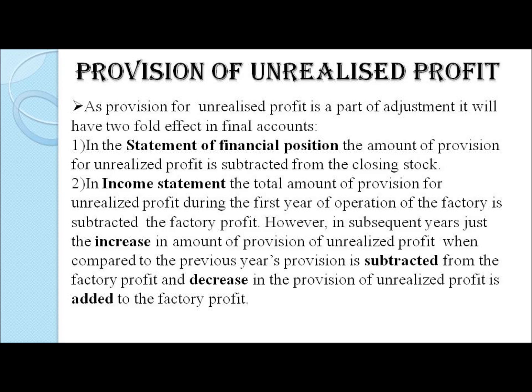As it is a part of adjustment, it will have a two-fold effect. Firstly, we subtract the total amount from the closing inventory in the statement of financial position. Furthermore, we subtract the total amount from the factory profit in the income statement during the first year of operation. In the following year, we find the difference in the provision for two successive years — if there is an increase in the provision we subtract it, and if there is a decrease we add it to the factory profit in the income statement.